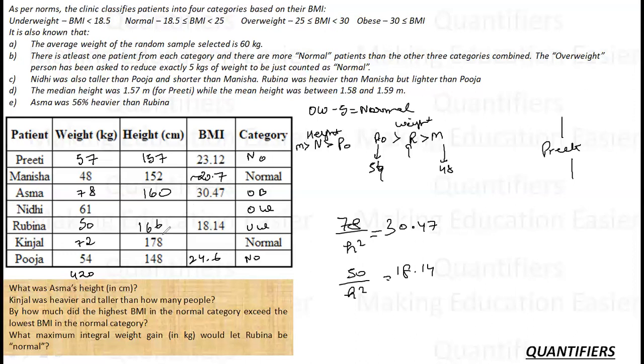Now we are left with, for Kinjal, it will be 72 square divided by 178. So 72 divided by 178 square will be somewhere around 22.7.